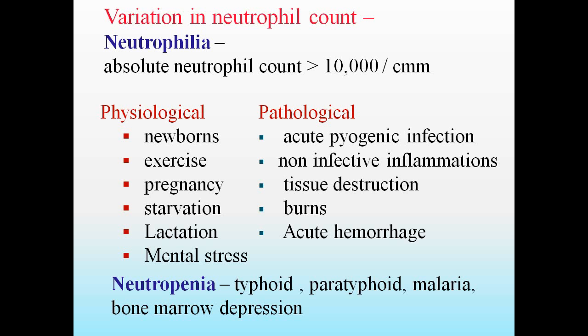The vice versa condition — neutropenia — is seen in arsenic poisoning, typhoid, paratyphoid, malaria, bone marrow depression, etc. You should know the variations in neutrophil count — neutrophilia and neutropenia.